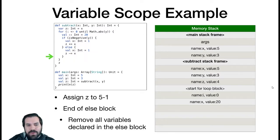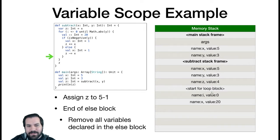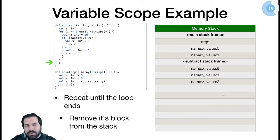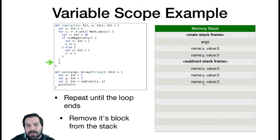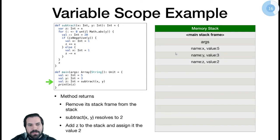We keep looping. After all iterations, z ends up with value 2. When we reach the end of the loop block, everything created inside that block — i and x — is destroyed. We get to the return statement: z is in the currently executing block with value 2, so we return 2. The subtract stack frame ends, we pop x, y, and z off the stack, return execution to the main frame, create z equals 2, and print 2 to the screen. Program over.